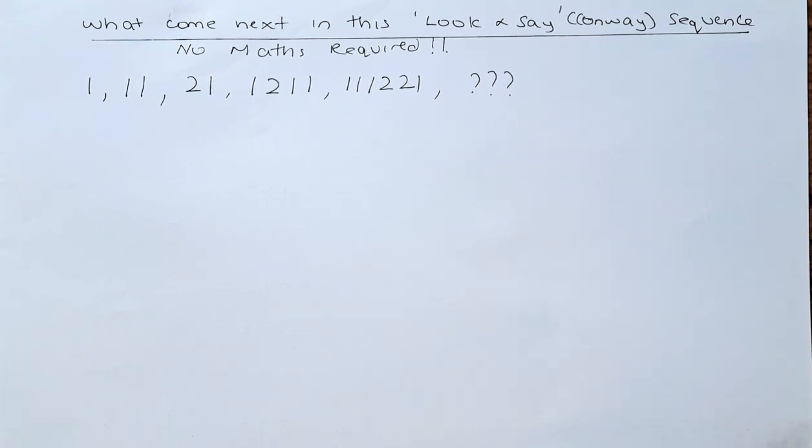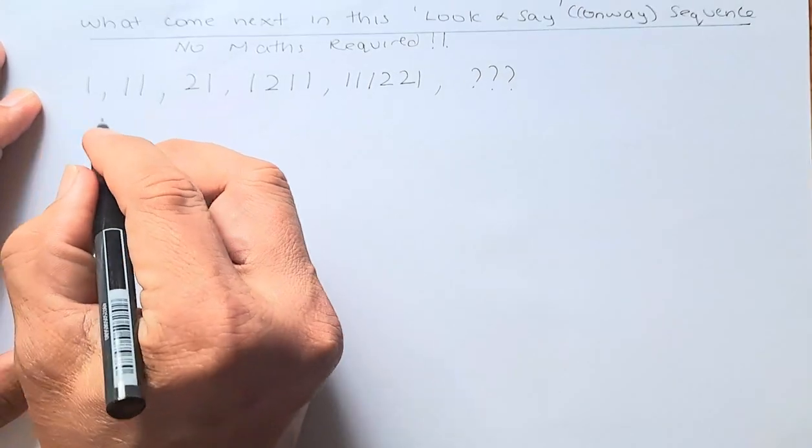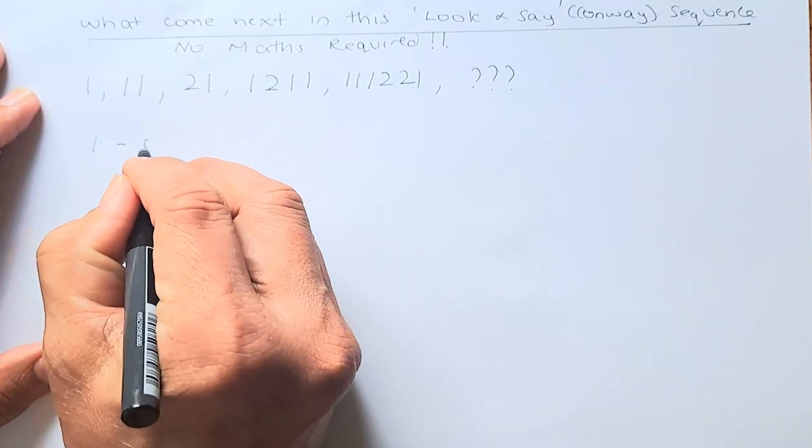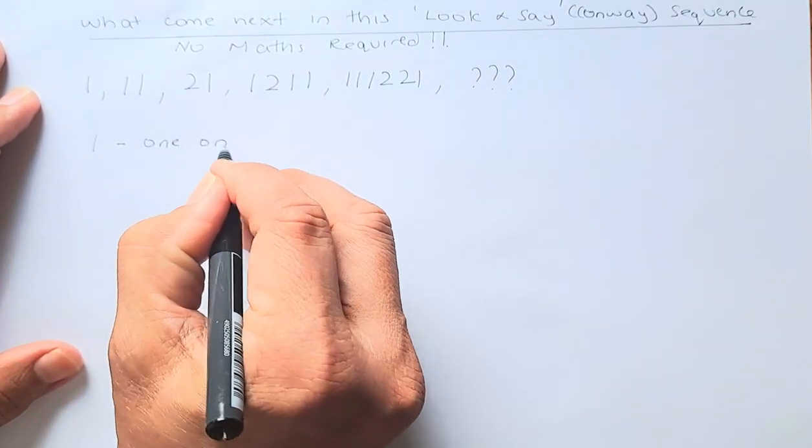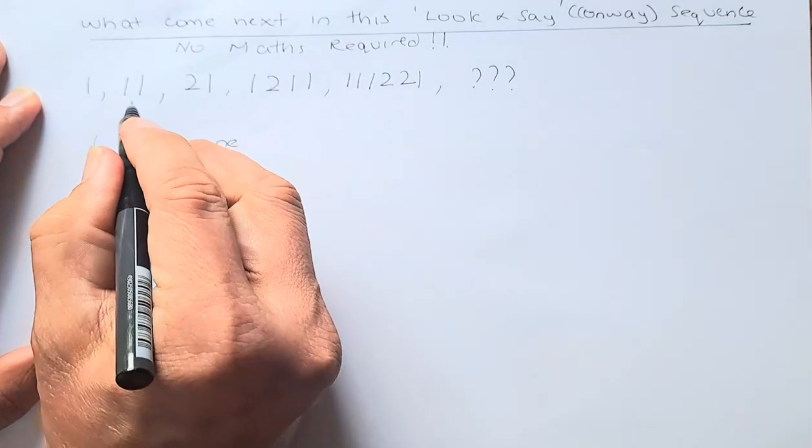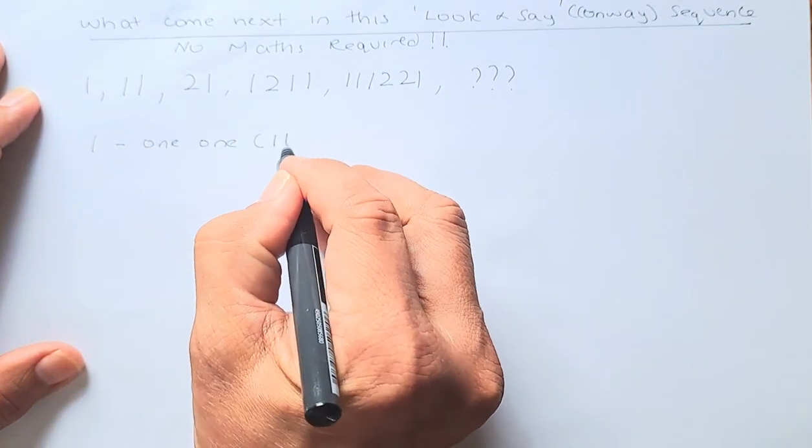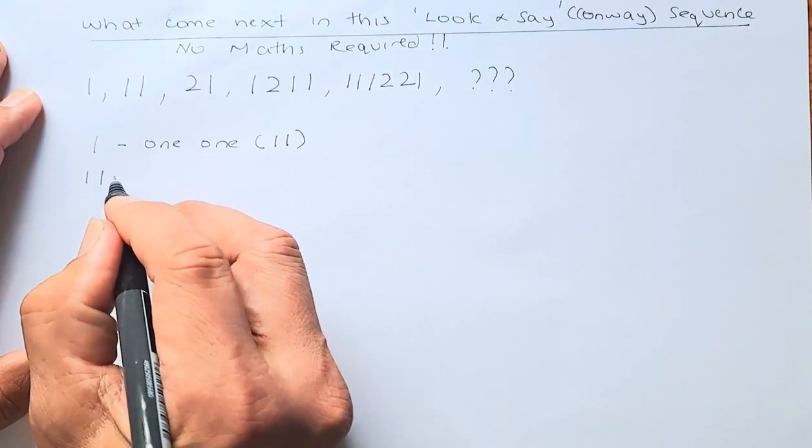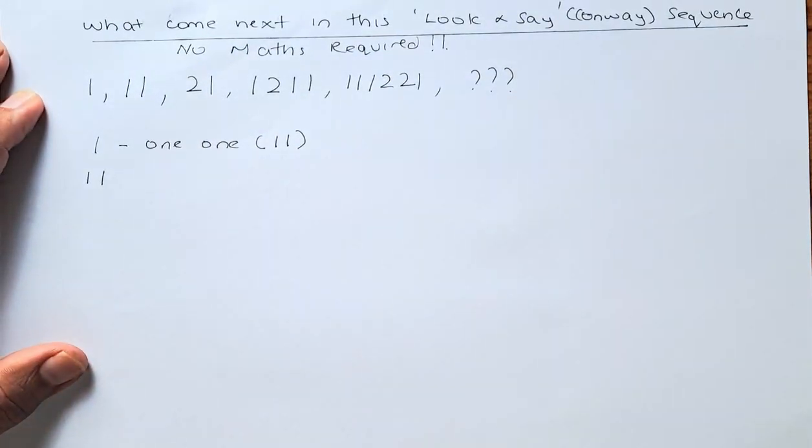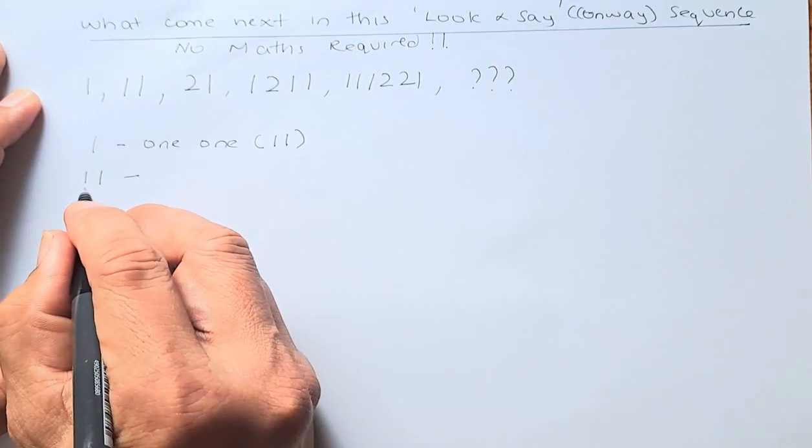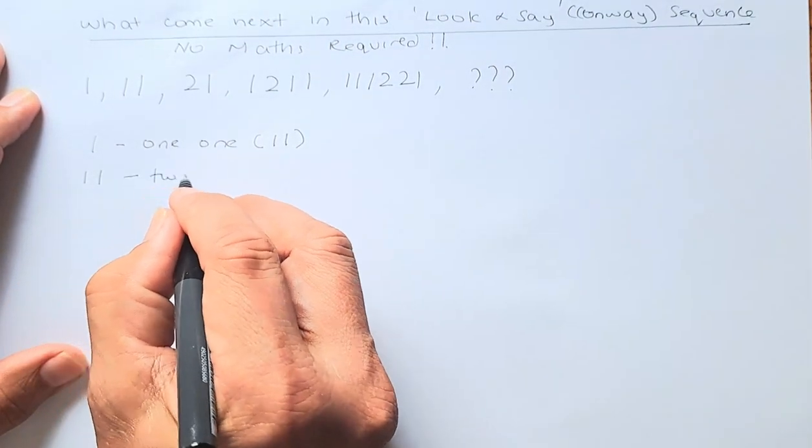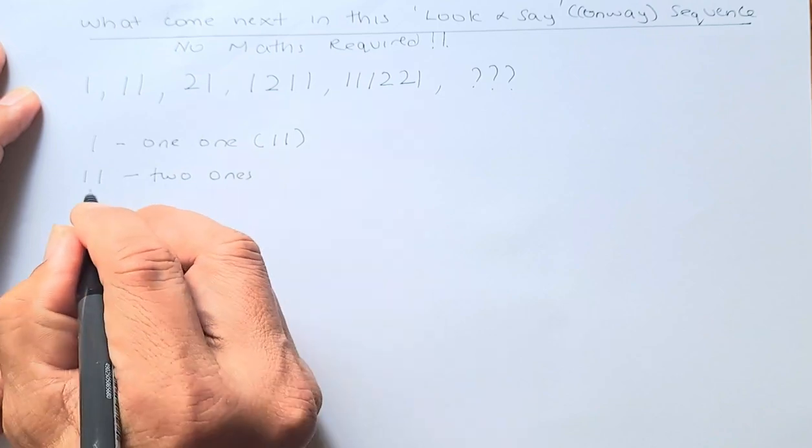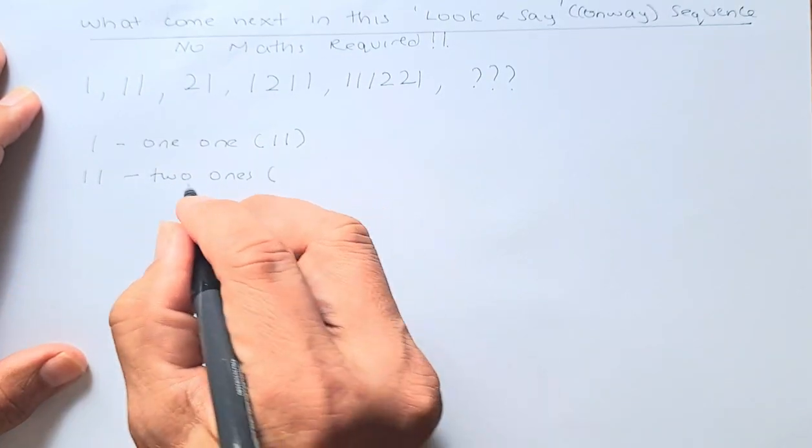So look at 1. There's only one 1, so 1 is actually equivalent to one one. That's why we get the next number which is 1 1, but in English in math it's called eleven, but it's actually one one. The next number, you have two ones, there are two ones, so you write them as 2 1.